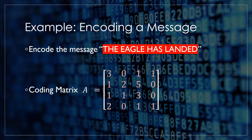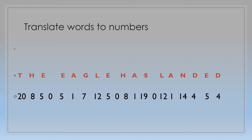Let us take this example to encode a message. We have to encode the message 'the eagle has landed' using the coding matrix A, which is a 4-by-4 matrix: 3, 0, 1, 1 / 1, 1, 2, 5 / 0, 1, 1, 3 / 0, 2, 1, 1. To encode this message, we have to translate the words to numbers using the list provided. So T denotes the number 20, H denotes 8, and so on.